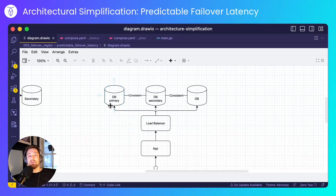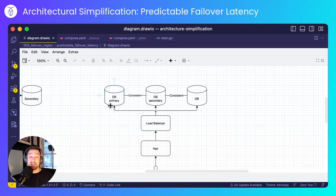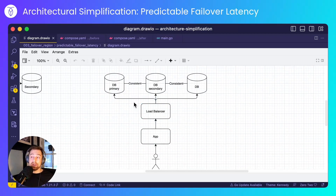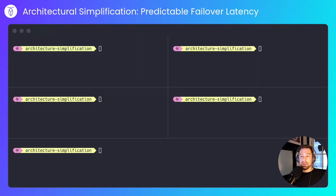This is just to show that I'll set up a primary region and achieve predictable failure latencies by having a secondary region configured. In front of that will be a load balancer which will balance requests from a simulated user. So without further ado, let's get cracking.